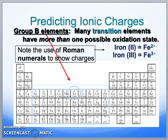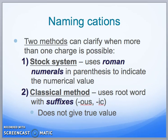Copper, for example, could have a charge of 1, 2, or 3. Iron is another example and could have a charge of 2 or 3. Roman numeral II tells us we have a charge of plus 2, and Roman numeral III shows a charge of plus 3. So when we are naming our cations, many times we have two different methods.